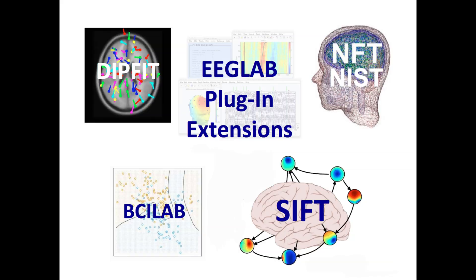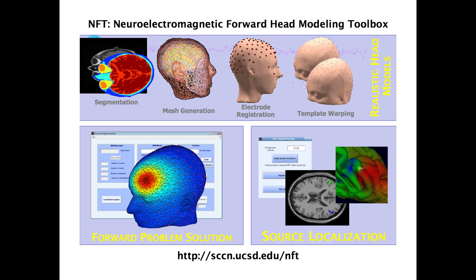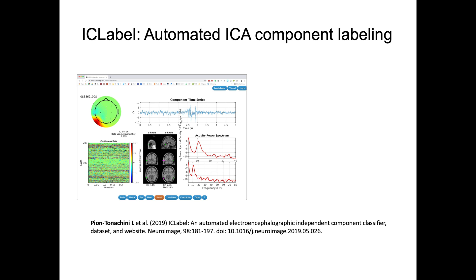The strength of EEGLAB is also all the plugins, and we've developed many of them ourselves. For instance, there is SIFT, the Source Information Flow Toolbox, that allows you to calculate brain dynamic connectivity. There is NFT, the Neuro Electromagnetic Forward Head Modeling Toolbox, that allows you to do precise source localization of ICA components. There is a new extension called EEGLAB and BIDS, which allows you to import and export in BIDS format. There's also ICLabel, a new plugin for automated ICA component labeling, which is very useful in pipelines.